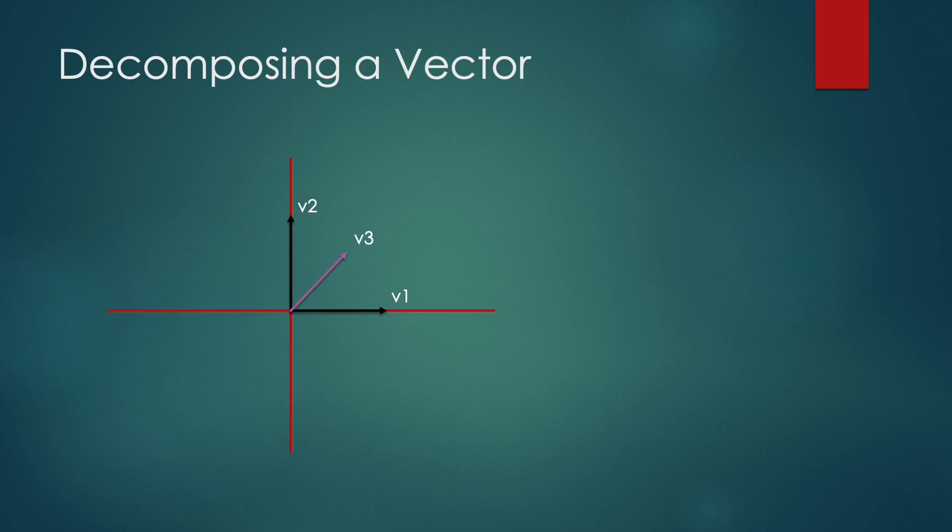We know that we can write v3 as a linear combination of v1 and v2, and that would look like this, where a is the coefficient on v1 and b is the coefficient on v2. Now since v1 and v2 are orthogonal, we know by the definition of orthogonality that the dot product between v1 and v2 is zero.